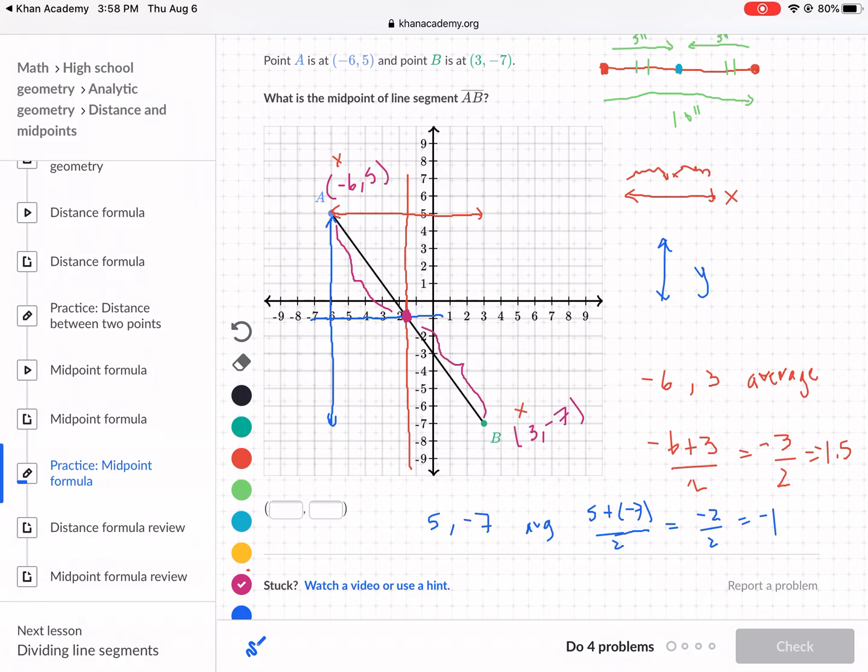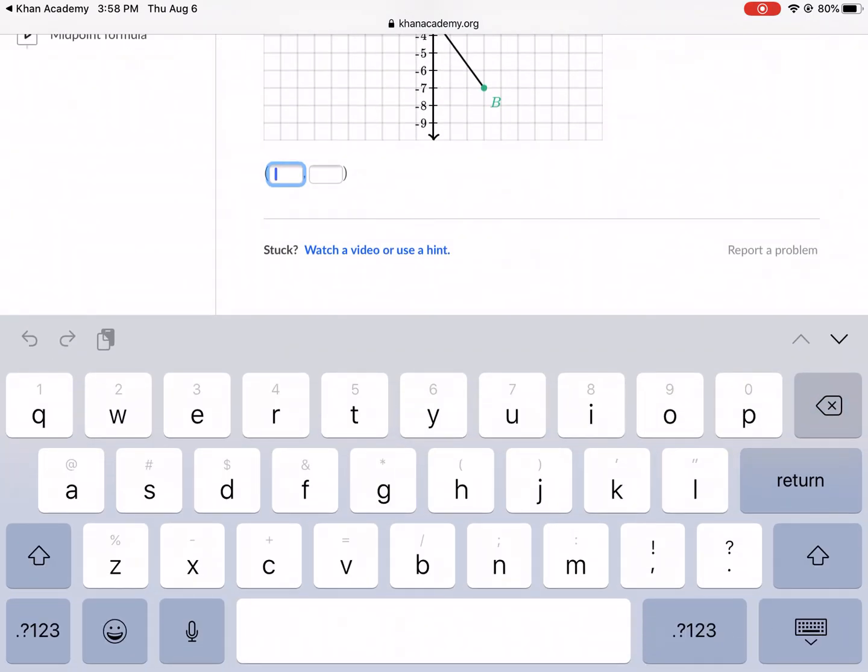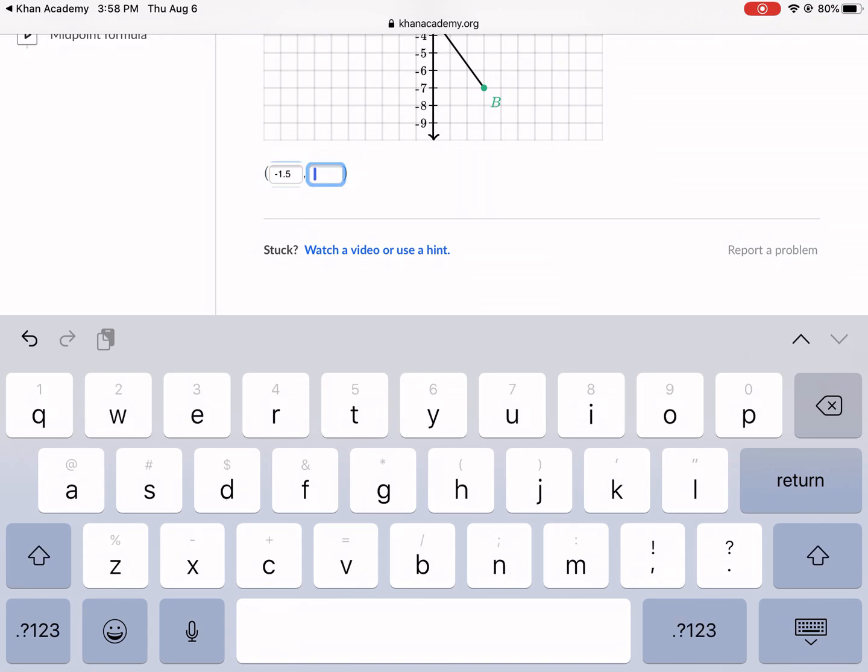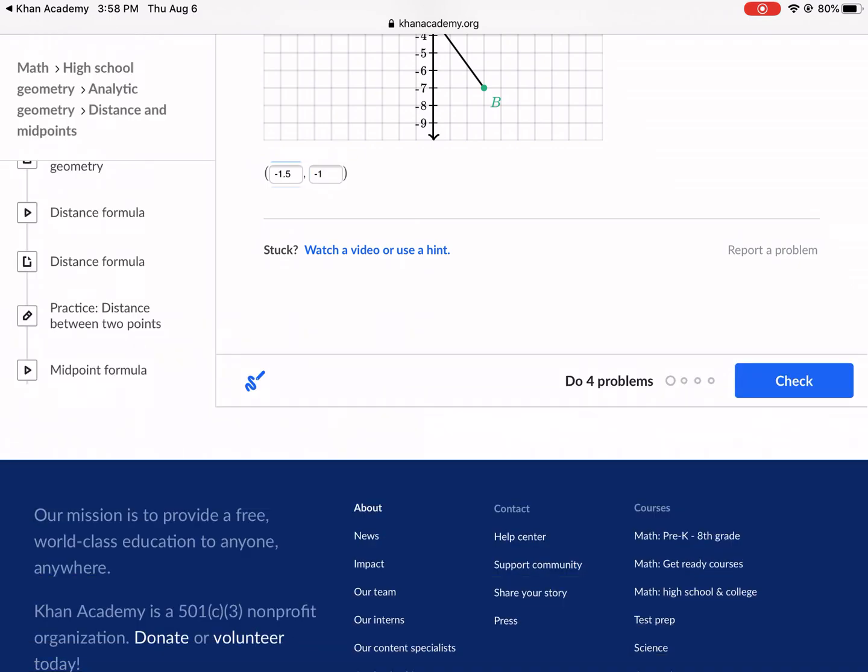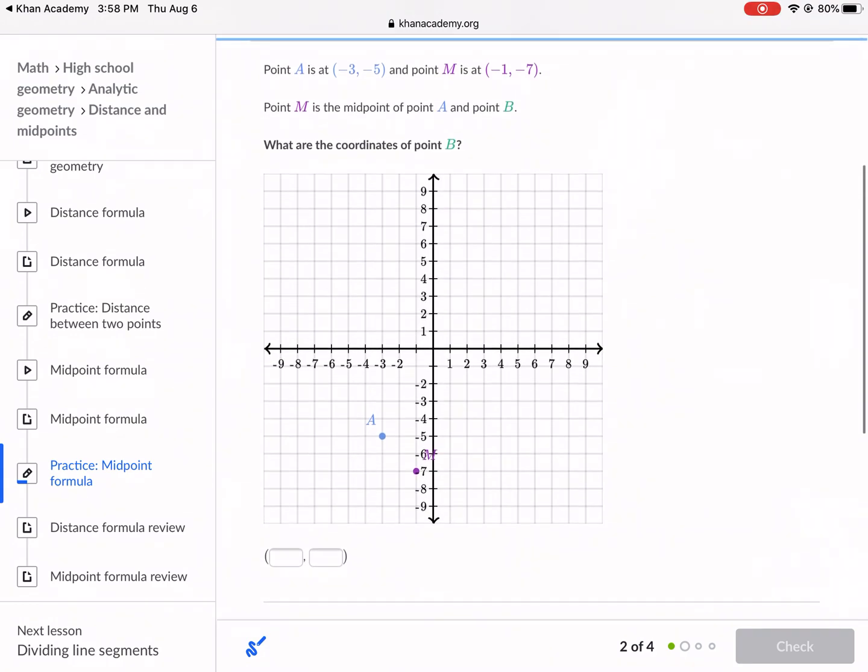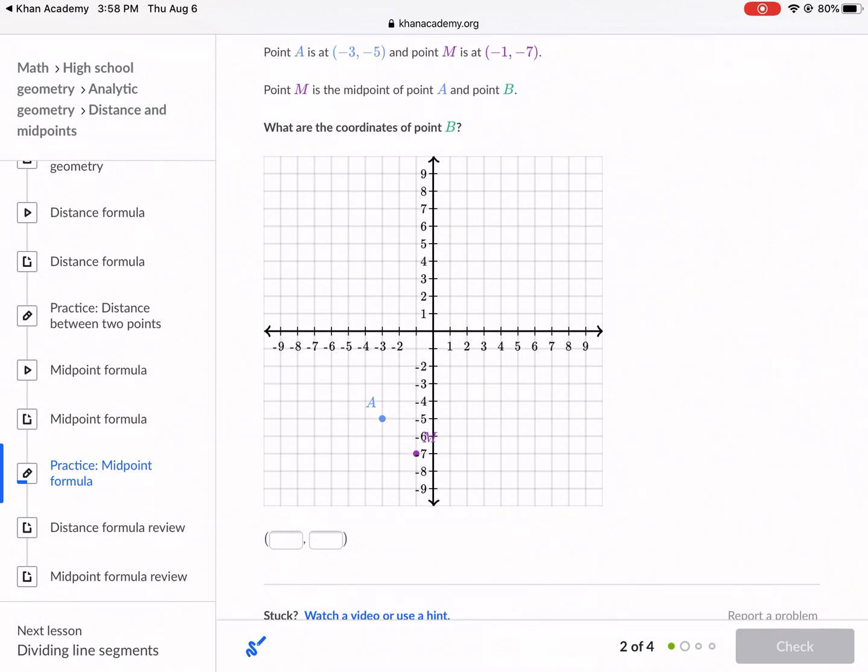That's one way to do it, and we can check that answer. We're going to plug in negative 1.5, negative 1. Let's check: negative 1.5, negative 1. And hopefully it doesn't want it as a fraction. It does not. Okay, there we go. Next question. Point A is negative 3, 5, and point M is at negative 1, negative 7. Point M is the midpoint of point A and B. What are the coordinates of point B?